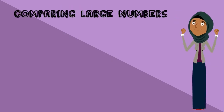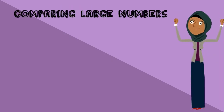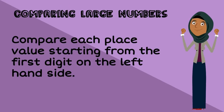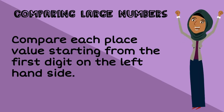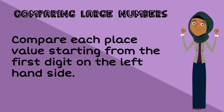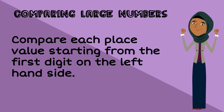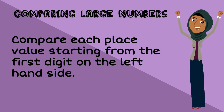So remember, when we're comparing large numbers, we compare each place value starting from the first digit on the left-hand side of each number.